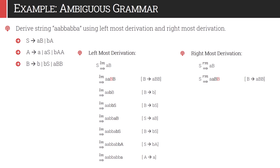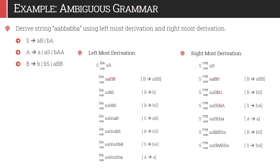We have two non-terminal symbols but we explore only the rightmost. Capital B is replaced by bS. Again we have two non-terminals, capital B and capital S, but we prefer the rightmost, capital S. So S is replaced by ba. Again we have two non-terminals, and we prefer the rightmost, capital A, which we replace by small a. The remaining replacements follow, deriving the same string.